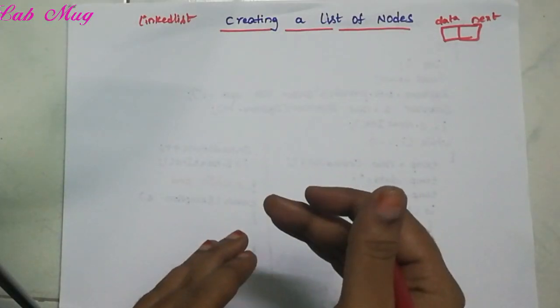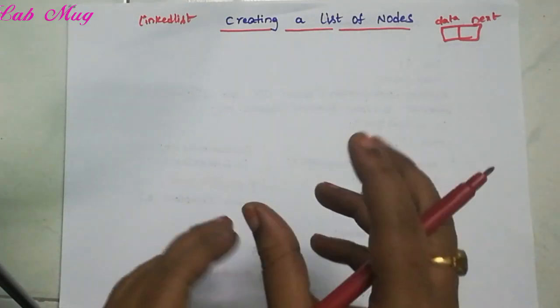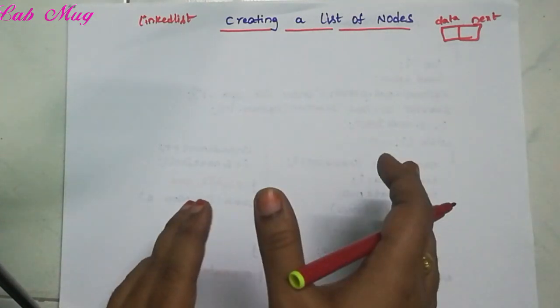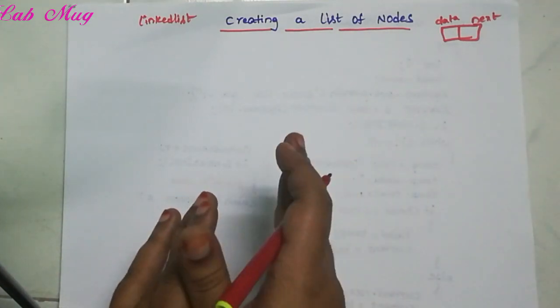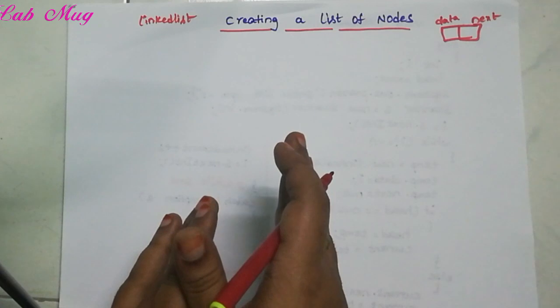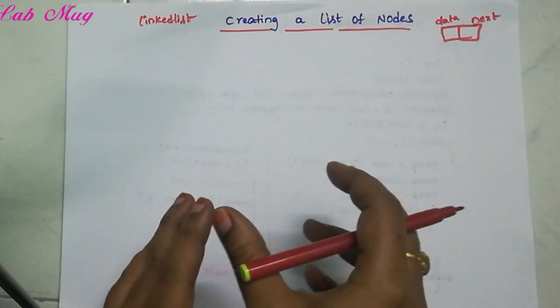Now let's start the main class. We can declare a number of methods. First, let's discuss the create method.